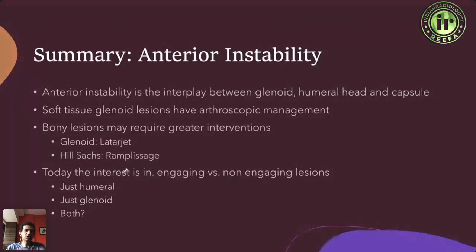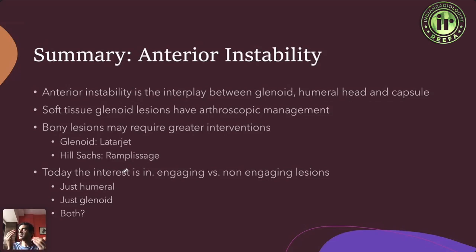For anterior instability, remember it is the interplay between the glenoid, the humeral head, and the capsule. Soft tissue glenoid lesions are typically managed arthroscopically. The key question is: is it just a labral lesion or does it have bony involvement? And if there is bony involvement, is it on the humeral side only or both humerus and glenoid? Today the focus is on determining whether people have an engaging Hill-Sachs lesion — if engaged, more aggressive intervention is needed.